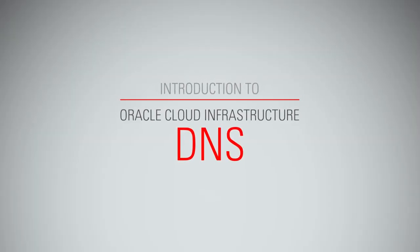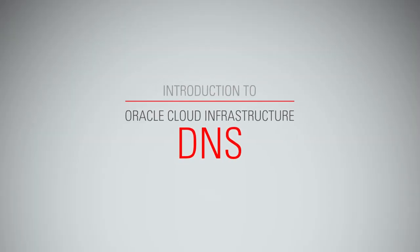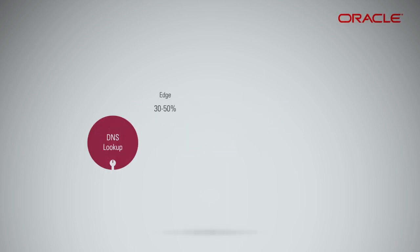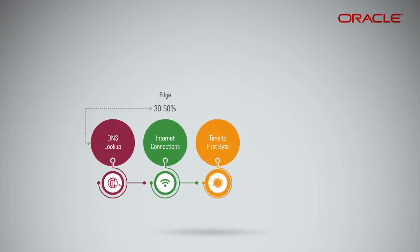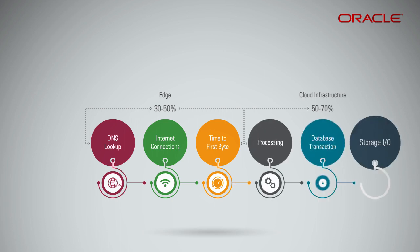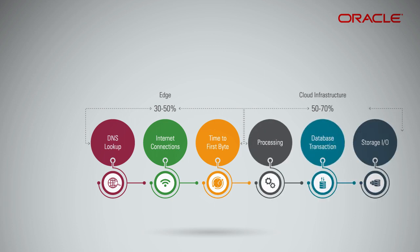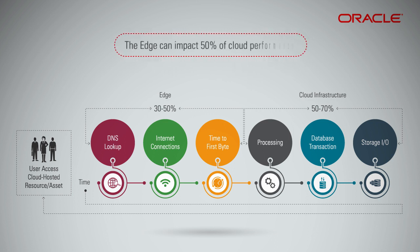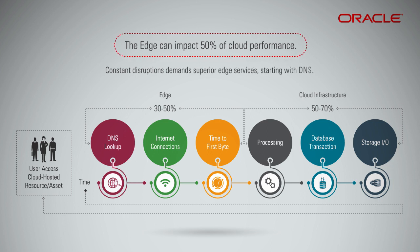Introduction to Oracle Cloud Infrastructure. Edge computing is a method of optimizing cloud computing systems by performing data processing at the edge of the network, near the source of the data. The edge can impact as much as 50 percent of cloud performance, where constant disruptions demand superior edge services, starting with DNS.